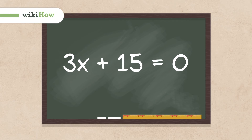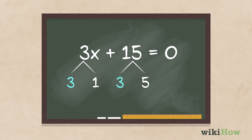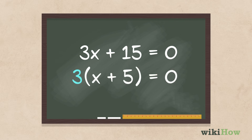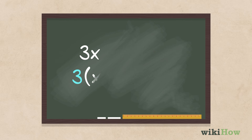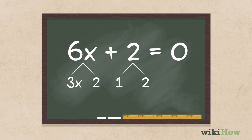To factor a basic algebraic equation, start by looking for the largest factor that all the numbers in the equation have in common. For instance, if your equation is 6x plus 2 equals 0, the largest common factor that can be divided evenly into both terms on the left side of the equation is 2.